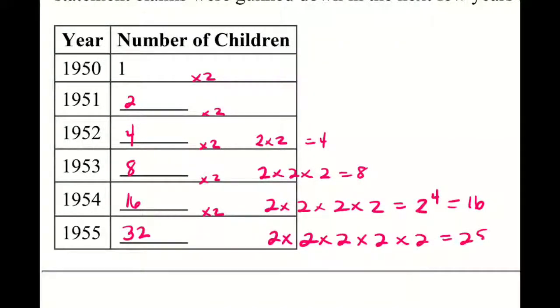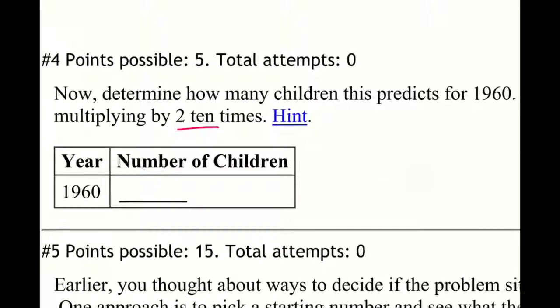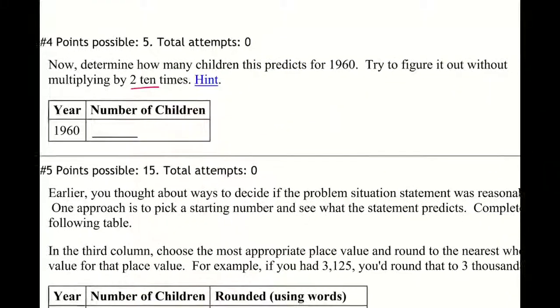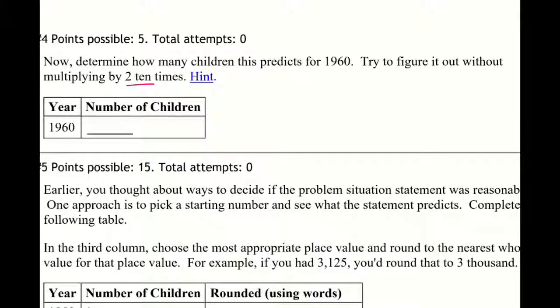So there's four twos, two to the fourth is 16, and then 32 would be five twos, so two to the fifth. So then for number four, we can use that pattern and do two to the tenth, so that means there's a 10 in the power of the exponent. So that will give me 1024.